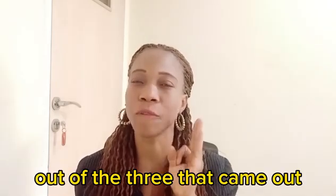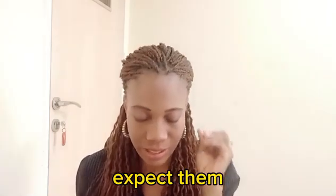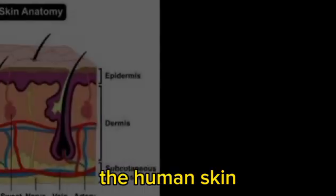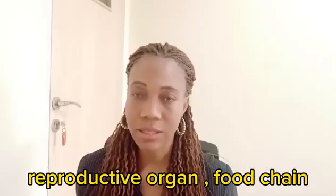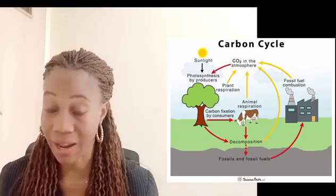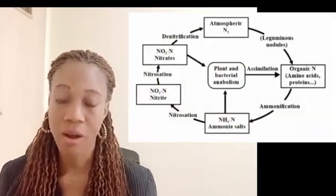Study the process and effects of environmental pollution, and there are more diagrams to study. Remember the practical that came up — we saw exactly two of what we were expecting out of the three that came out. Out of these diagrams you're going to learn, expect: plant and animal cells, the human skin, reproductive organs, food web, nitrogen cycle and carbon cycle. These are regular topics.